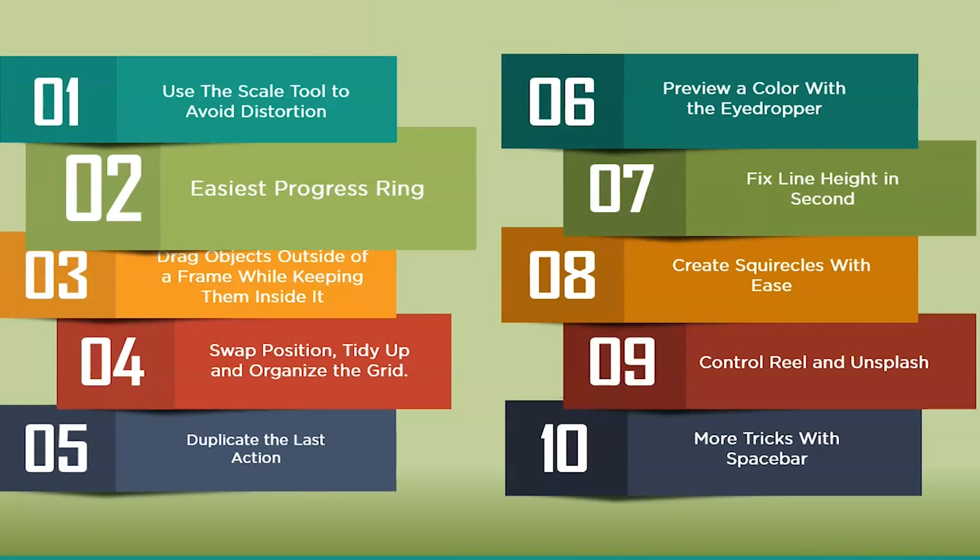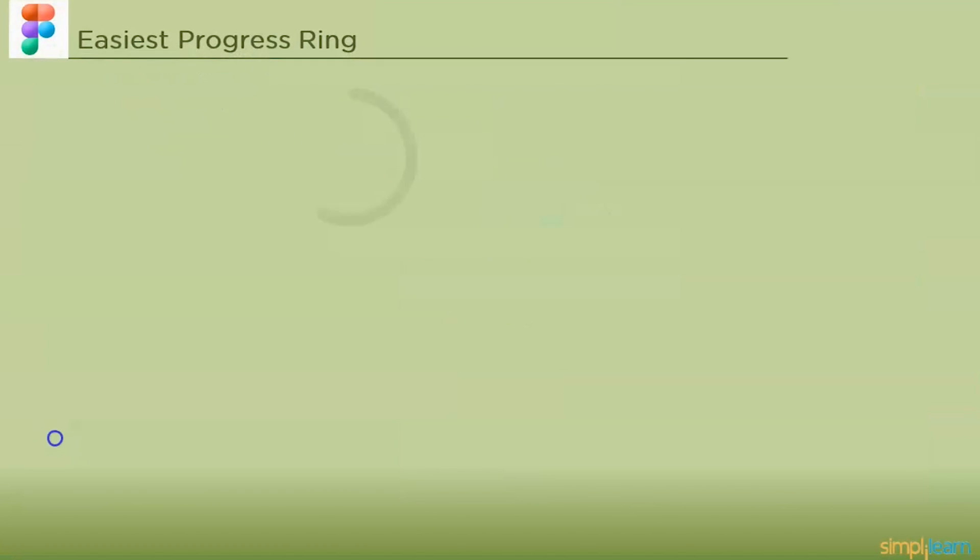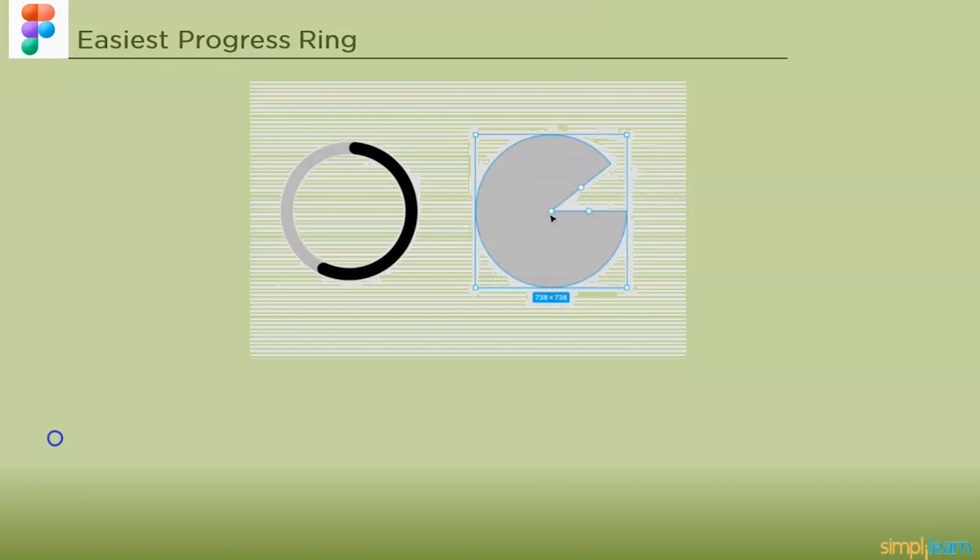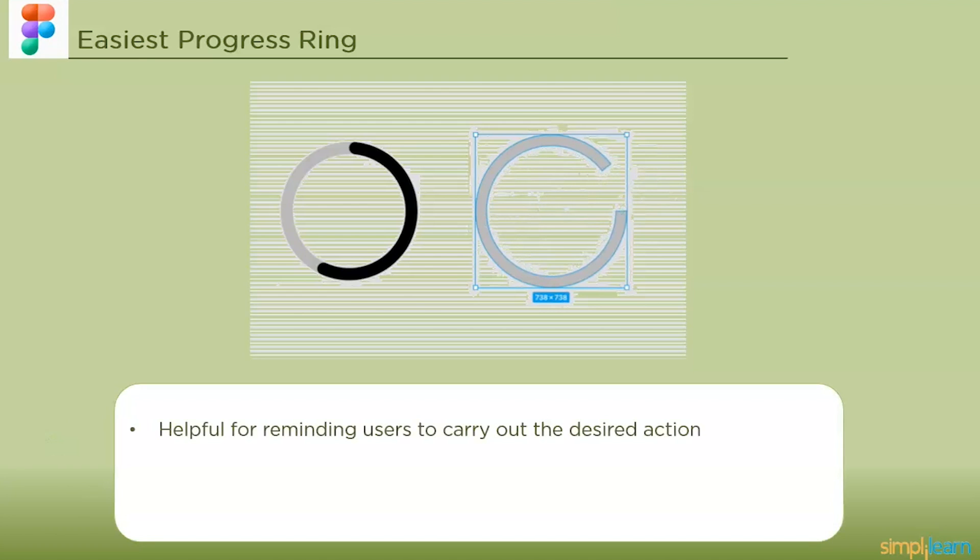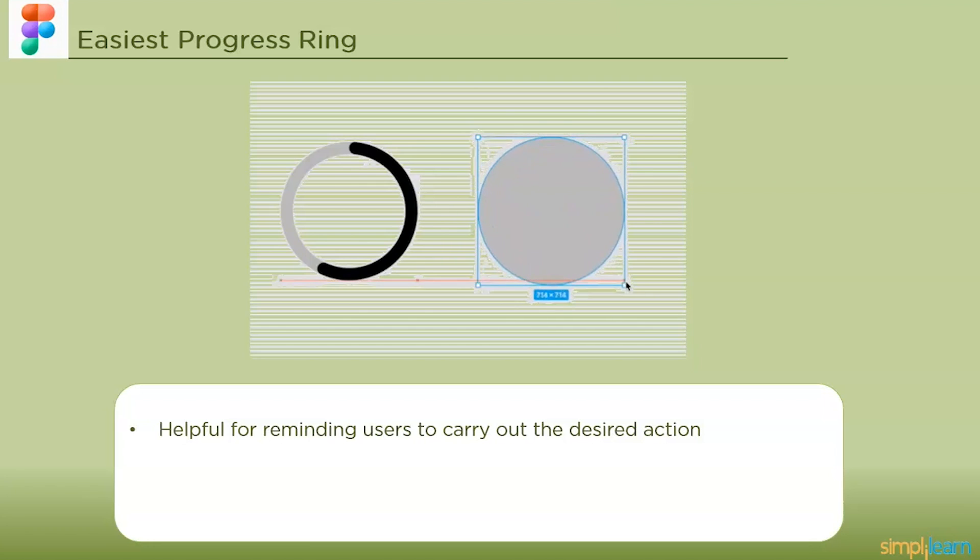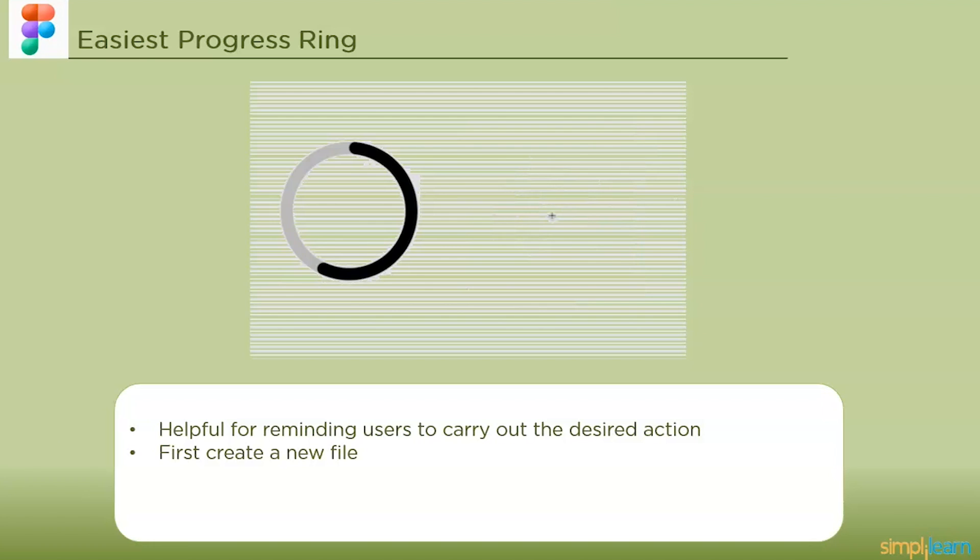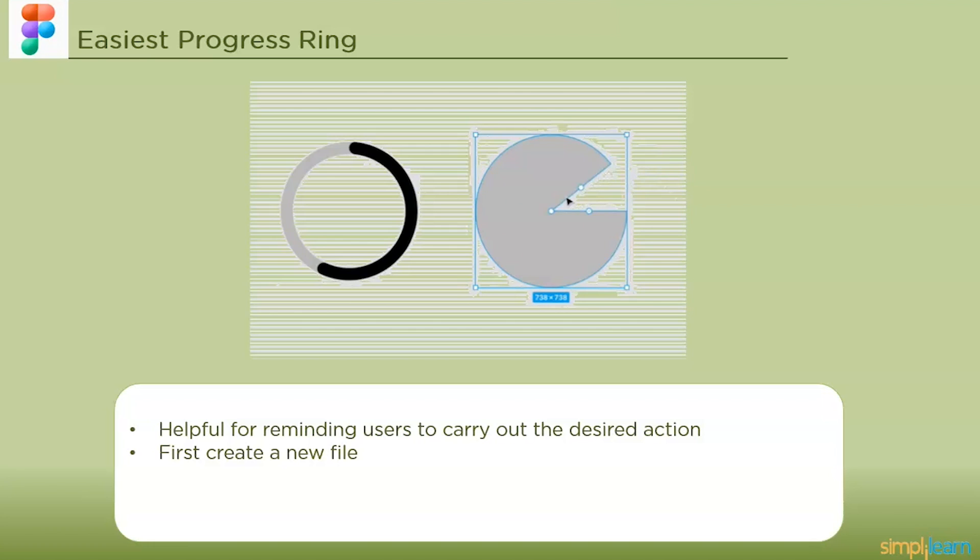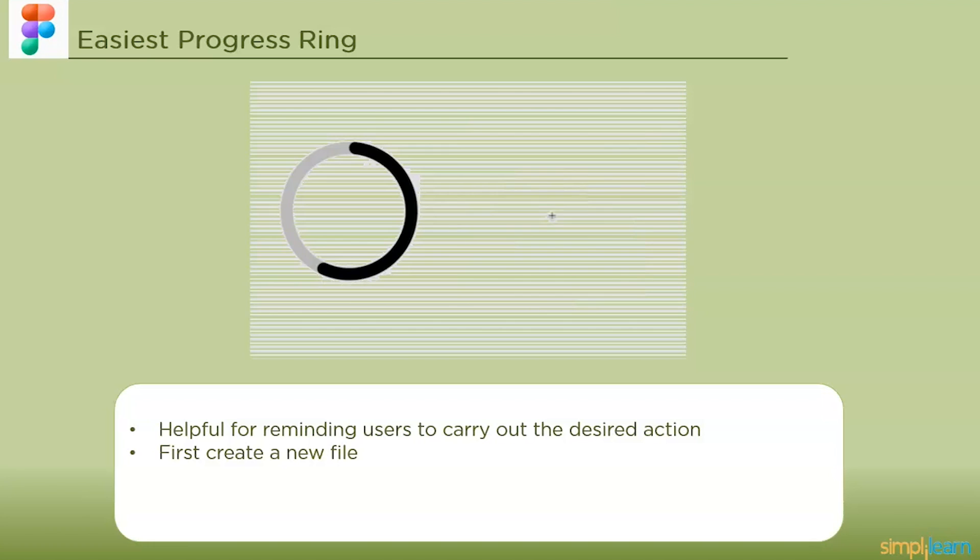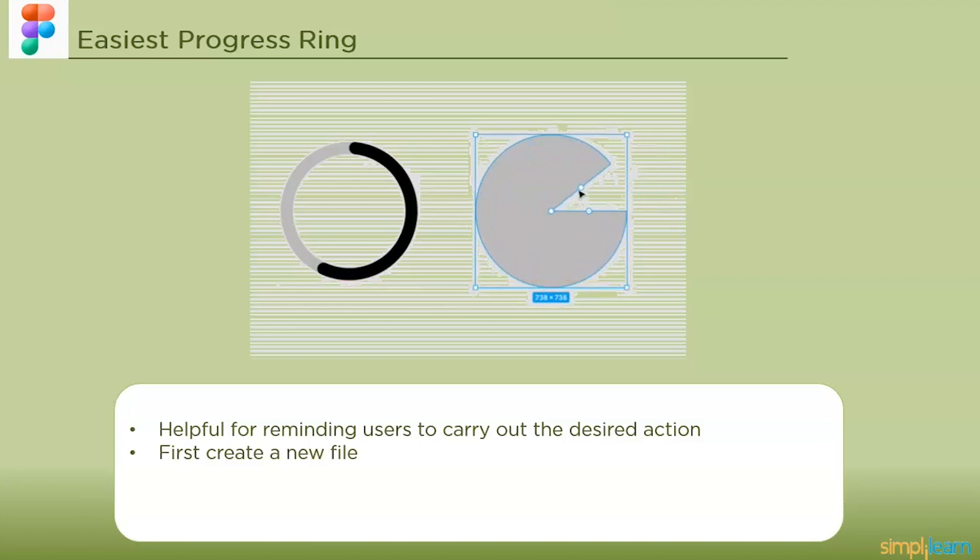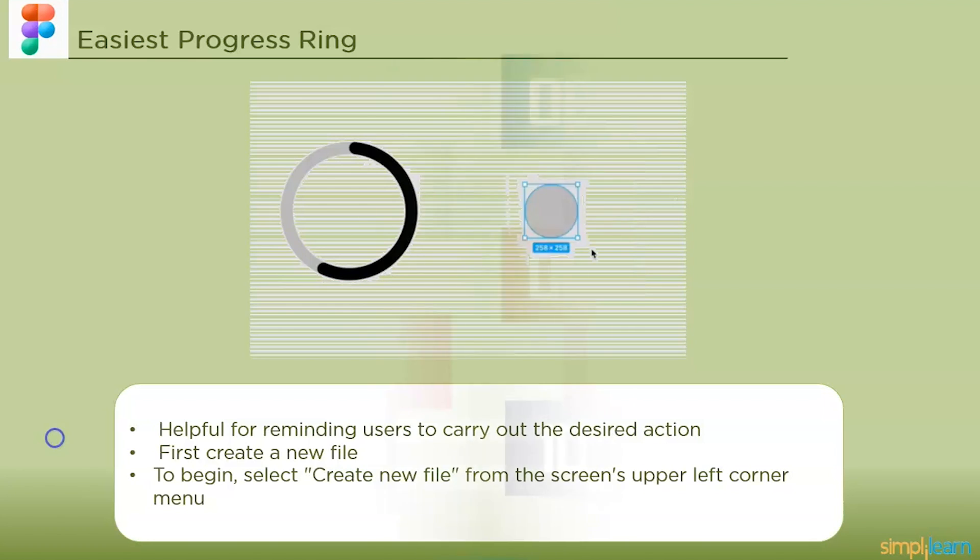The next one is easiest progress ring. Figma is a great application for designing rings since it has many tools and features that make it simple to construct beautiful patterns. These are helpful for reminding users to carry out the desired action or for letting them know how much of a product or plan they have left. In Figma you must first create a new file. To begin select create new file from the upper left corner menu. In the menu on the left side of the screen select the shapes tool. This will display a menu of several forms you may use in your design. We advise utilizing the circle for rings.